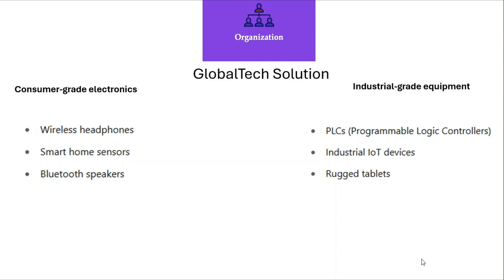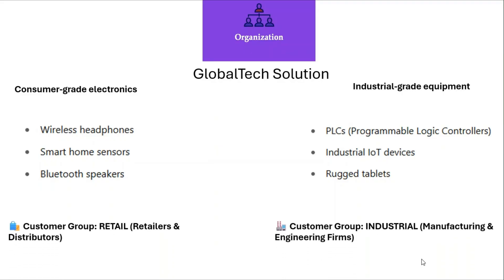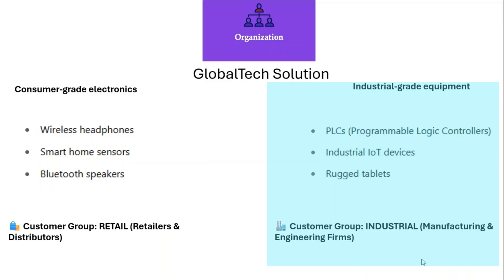Ideally, this company wants to have a control in the system so that whenever any customer falls under the Retail Customer Group or Retailers and Distributed Customer Group, the applicable items allowed to sell are wireless headphones, smartphone sensors, and Bluetooth speakers. Conversely, whenever a customer falls under the Industrial Customer Group, the only applicable items visible in the sales order, sales agreement, or sales quotation are PLCs, Industrial IoT Devices, and Rugged Tablets.